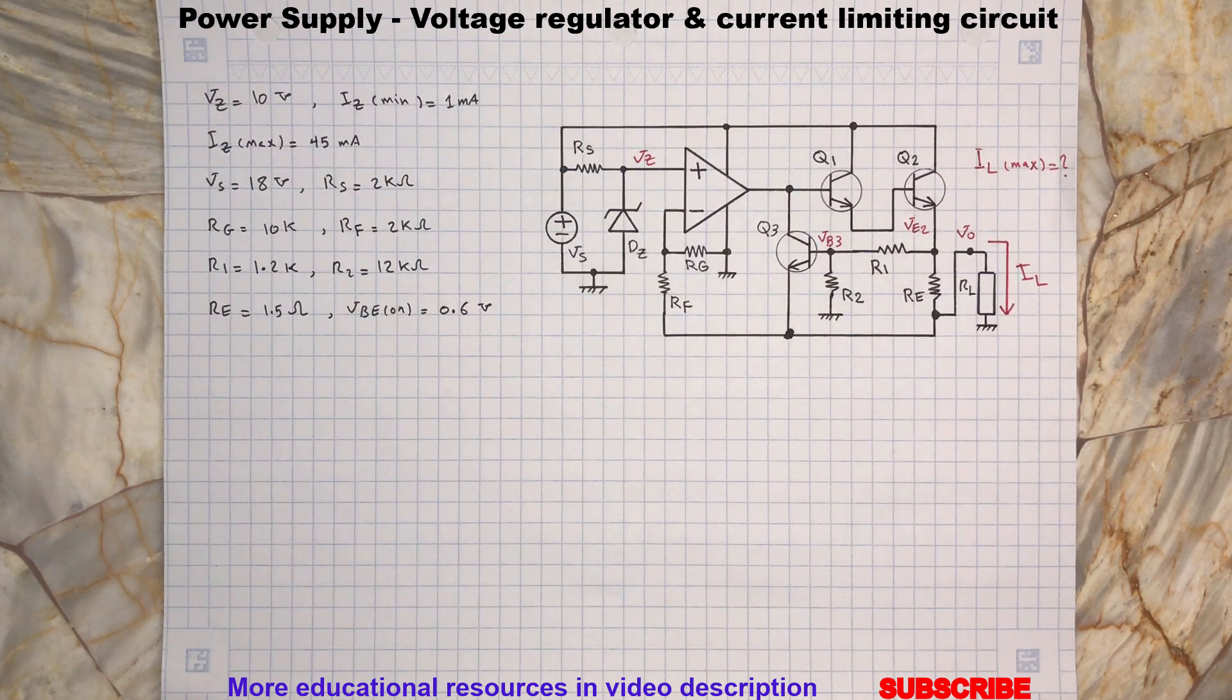In this circuit the input unregulated voltage source VS is 18 volts and the Zener diode DZ provides the reference voltage at 10 volts.